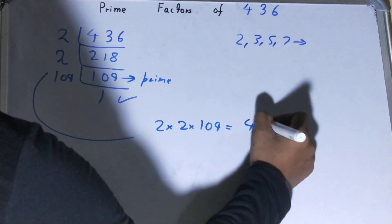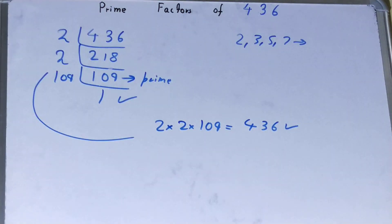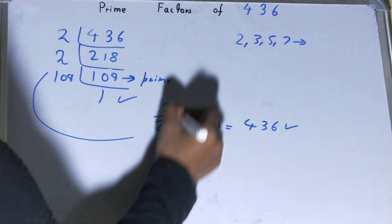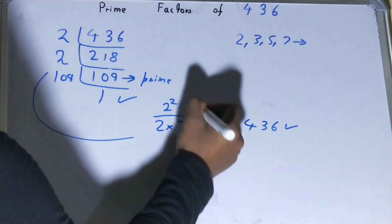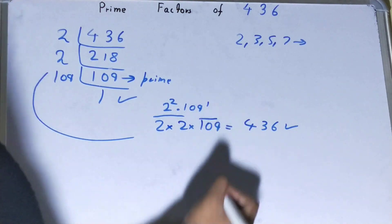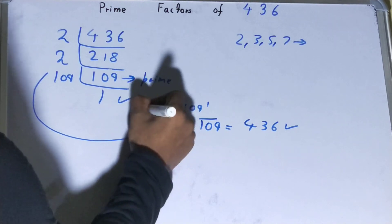You can also write it in a different way. You have 2 times 2, so you can write it as 2 squared. You have one time 109, so you can write it as 109 raised to power 1. So you can write it this way or this way, it's up to you.